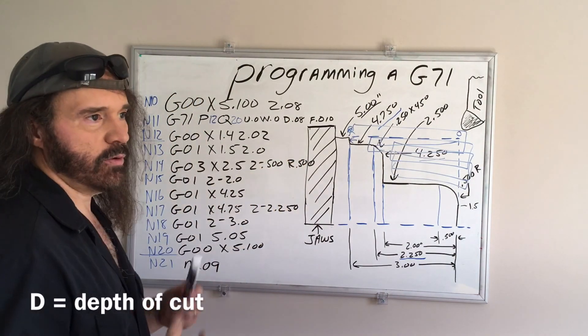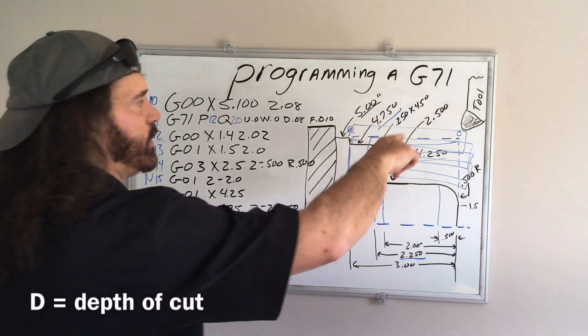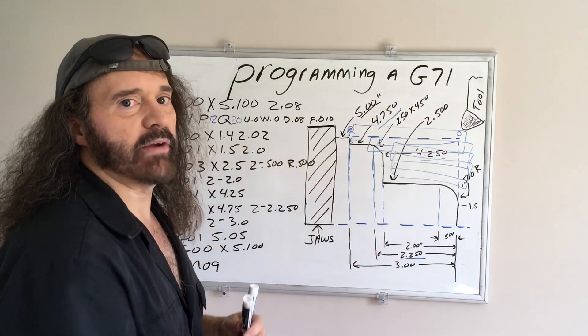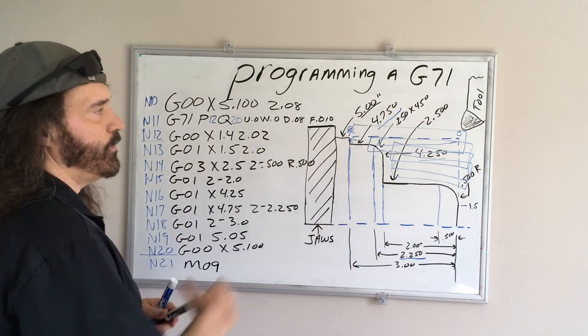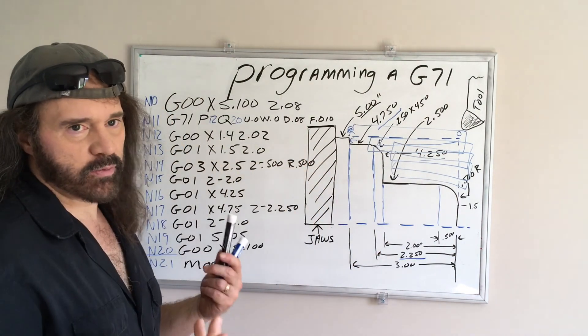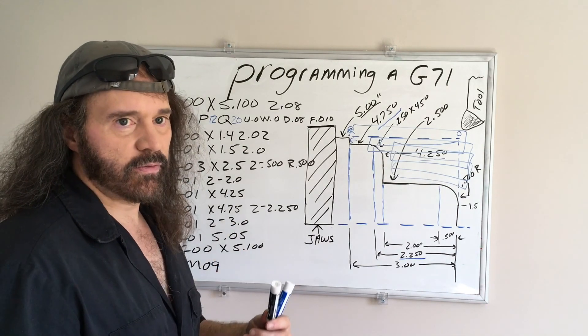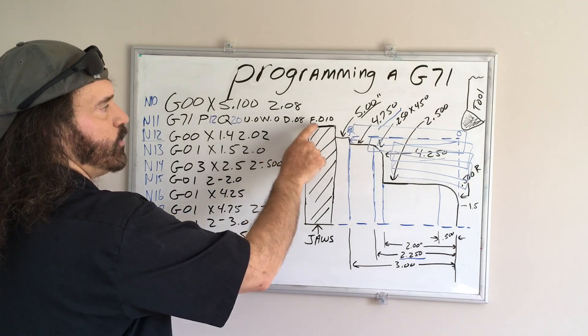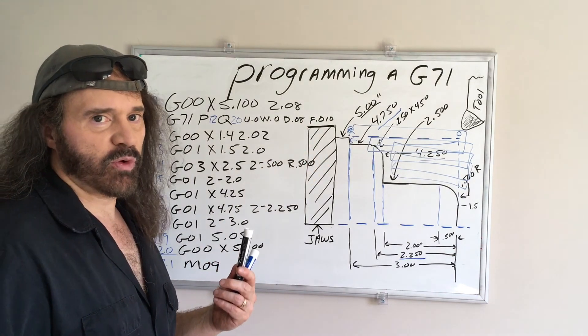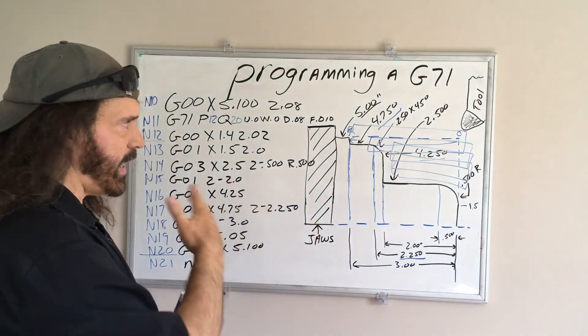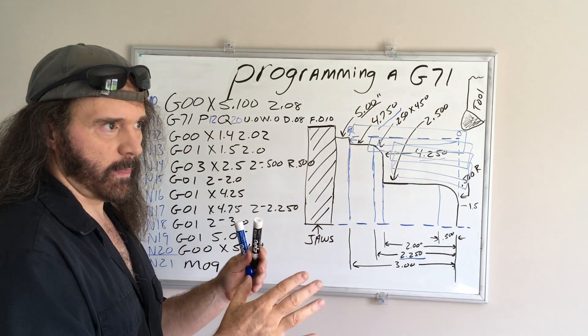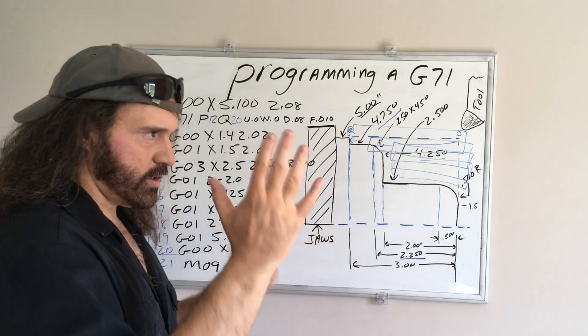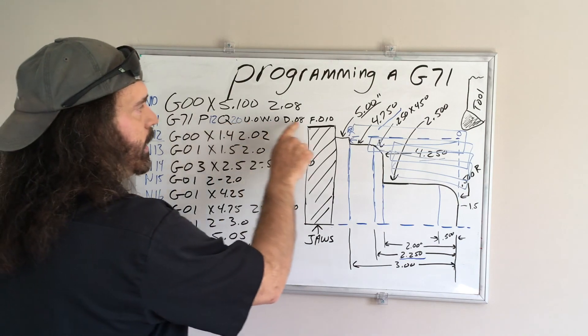Depth of cut, I'm doing 80 thousandths. So what that means, it's going to jump down 80 thousandths for every cut. This, you can play with, that's how heavy and aggressive you want to be with your cutting. So you can play with that. And your feed, I just drew 10 thousandths per revolution just for this demo. That you can play with too. You might have to fiddle around with the load on the spindle, on the cutter, all that stuff. So that's all one line.